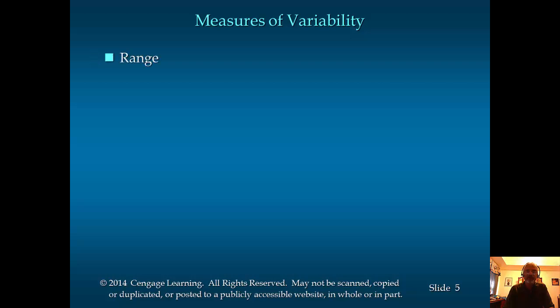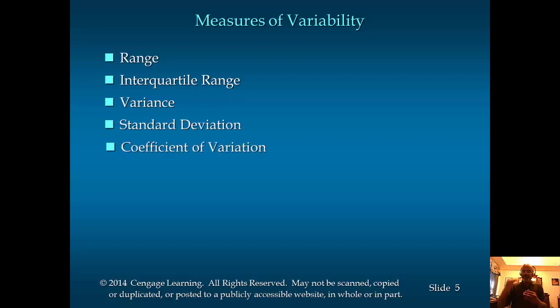Now, measures of variability. There are several measures of variability. Range will be the largest value minus the smallest value. So if you take a data set and data goes from 30 to 100, then 100 minus 30 equals 70. 70 is your range.